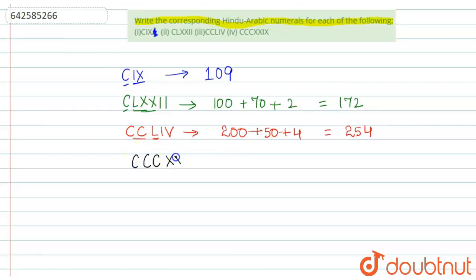Double X is for 20 and this is 9. So the number is 329. I hope the query is resolved. Thanks for watching.